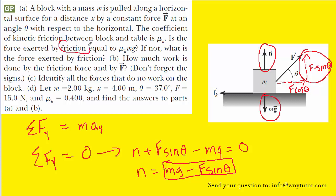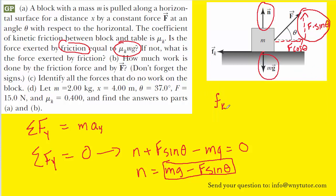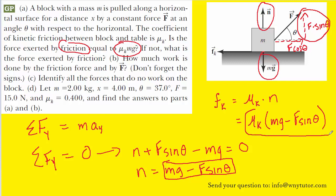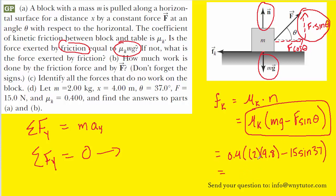Now we're prepared to answer part A. The formula for kinetic friction is equal to the coefficient of kinetic friction, mu k, multiplied by the normal force. We just determined an expression for the normal force, so we substitute that in for N. Doing so, we can see that the kinetic frictional force is not, in fact, equal to mu k times mg. We can actually calculate the frictional force by substituting in the known values for mu k, mg, F, and theta, which yields 4.2 newtons.